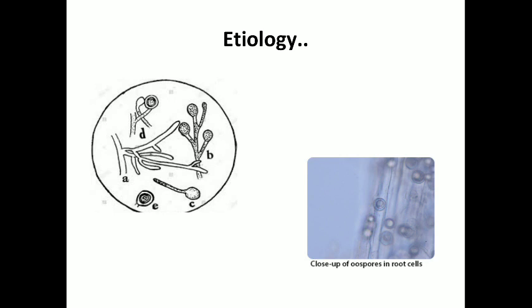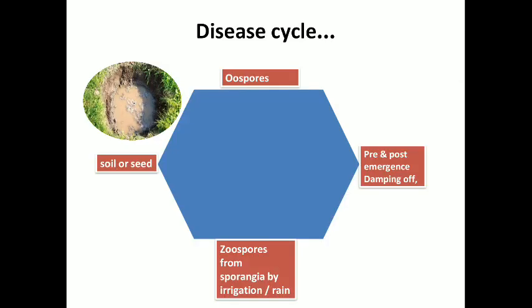Oospores are thick and brownish in appearance, found in the root cells. In case of disease cycle, the pathogen survives in the soil or seed in the form of oospores. Damp conditions or ill-drained soils favor disease development, producing pre- and post-emergence damping off symptoms. Secondary infection occurs by zoospores from sporangia, spread by irrigation or rainwater.